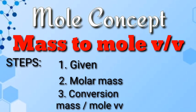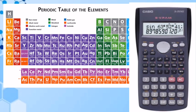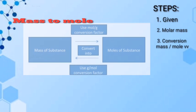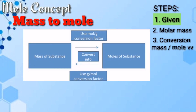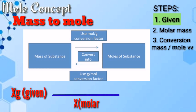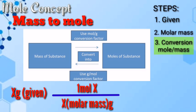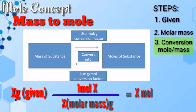Are you ready? Get your periodic table and scientific calculator. This is our roadmap on how to get the correct answer. Always start with a given, then get the molar mass and the conversion factor between one mole of a substance and the molar mass. After that, we can cancel out grams, leaving mole as the answer.